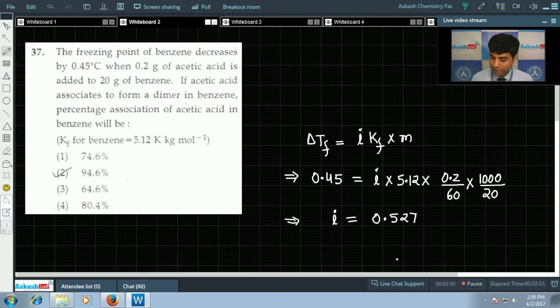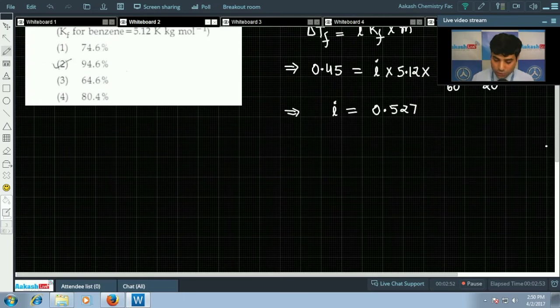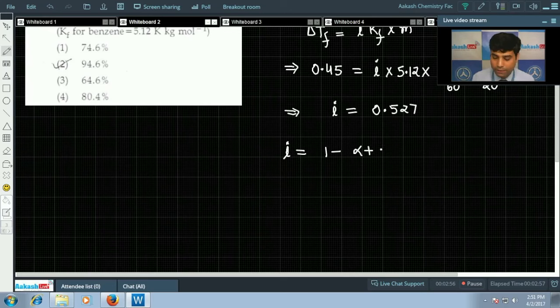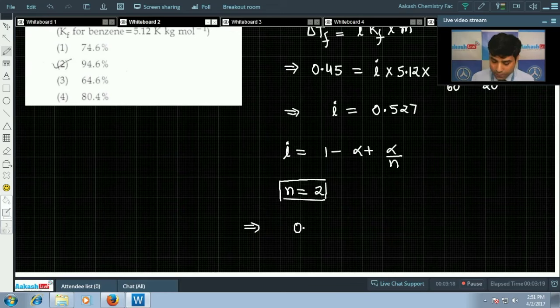As we know, for association, i is equal to 1 minus alpha plus alpha by n, where alpha is degree of association and n is the number of associated molecules. Here it forms dimer, therefore n equals 2. i is given 0.527.